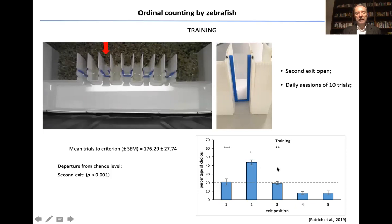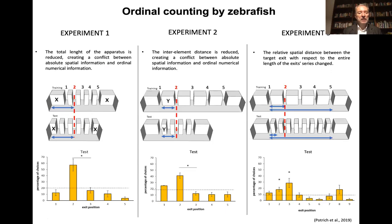And you can see the results of this experiment here, with choice for the second door, which is quite clear. Obviously it's difficult to say whether the fish are really counting on the basis of the sequence or if they are simply using distance in some way.